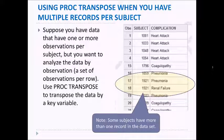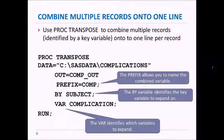Here's an example. We see PROC TRANSPOSE DATA=complications and the output data set we're going to call COMP_OUT. We specify the prefix we want to be COMP. The BY variable identifies the key variable to expand on—so SUBJECT, that's the one that has multiple records—and the VAR that we want to expand is the variable COMPLICATION.